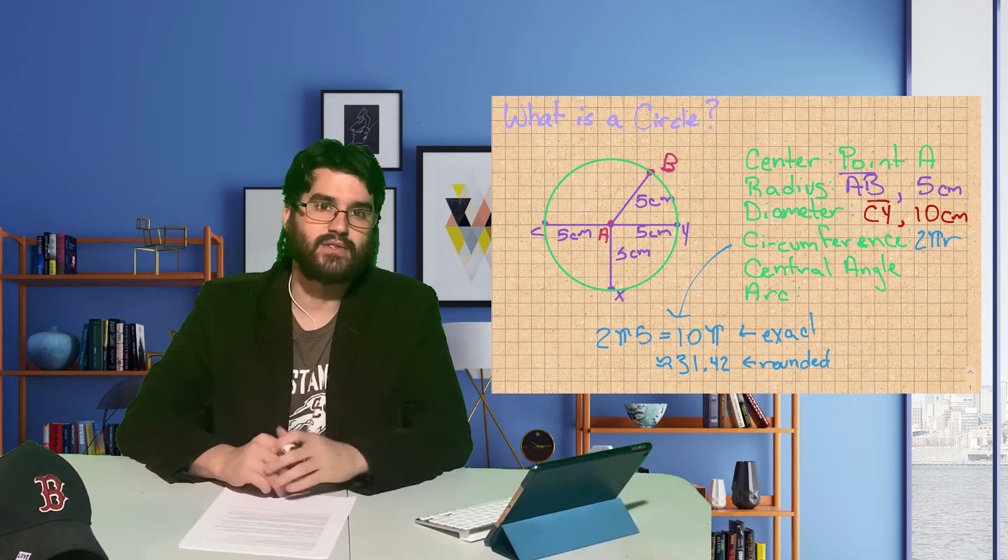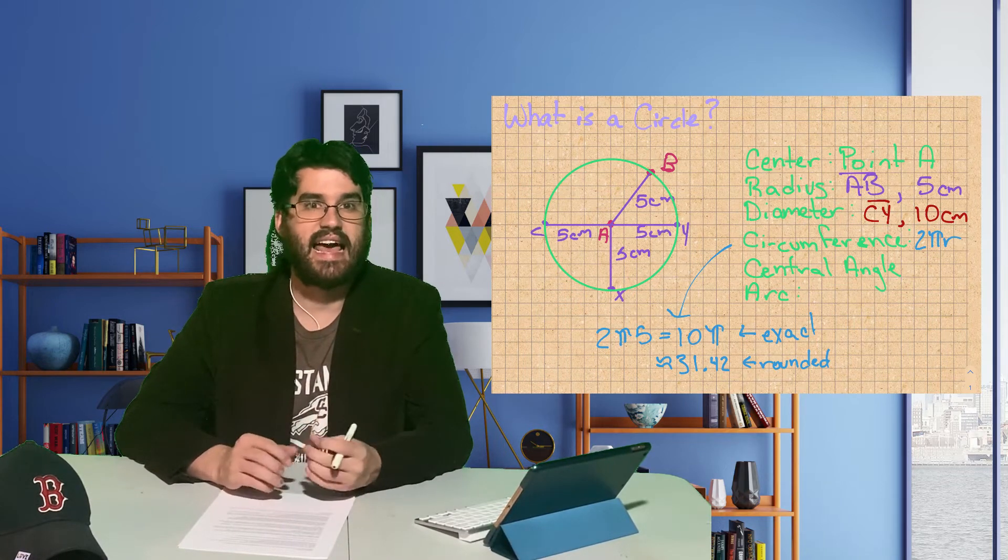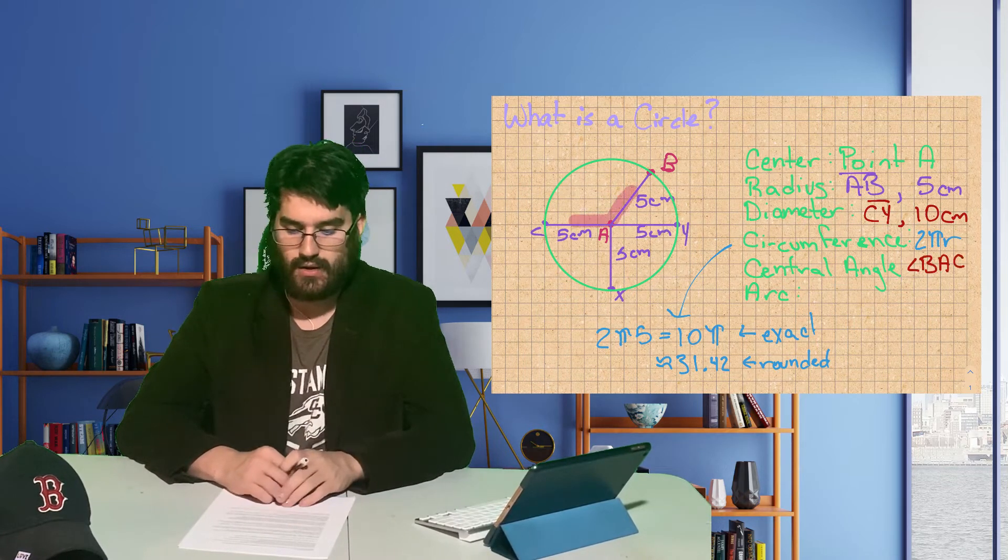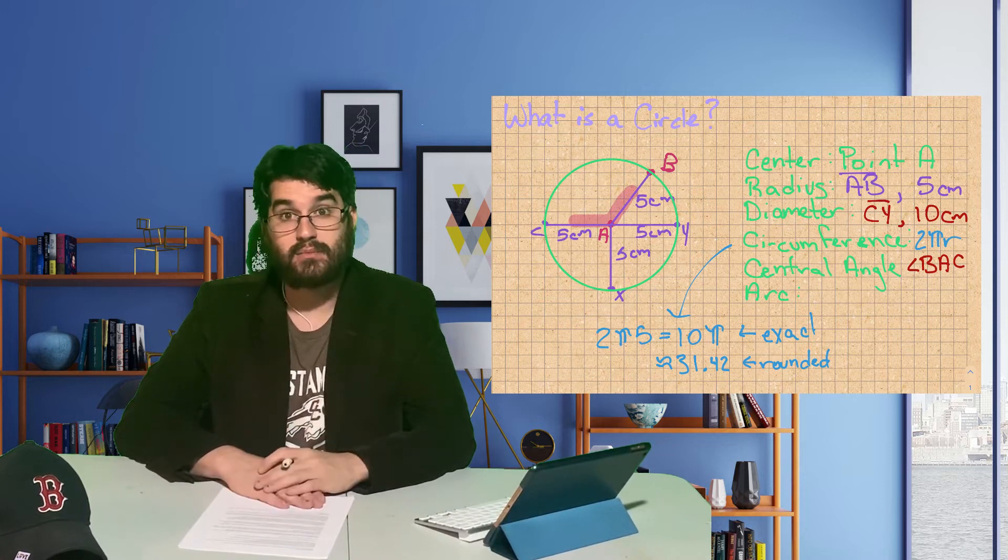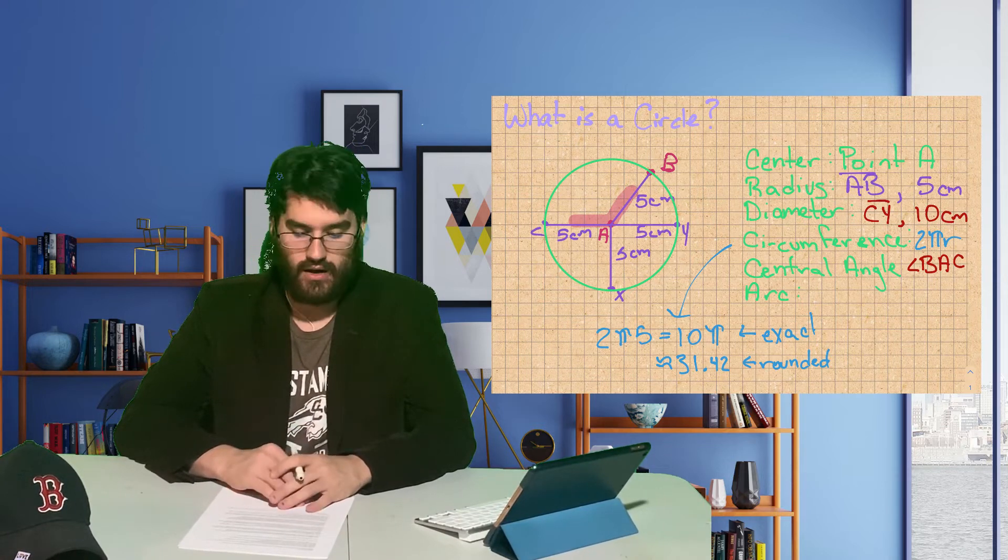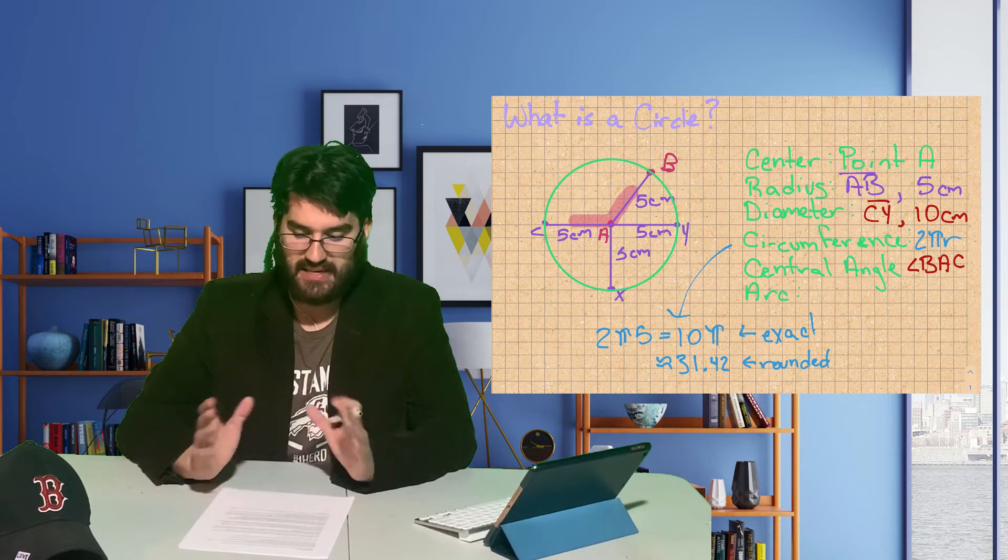A central angle of a circle is an angle whose vertex is at the center of the circle. There are multiple central angles drawn. For example, angle BAC.